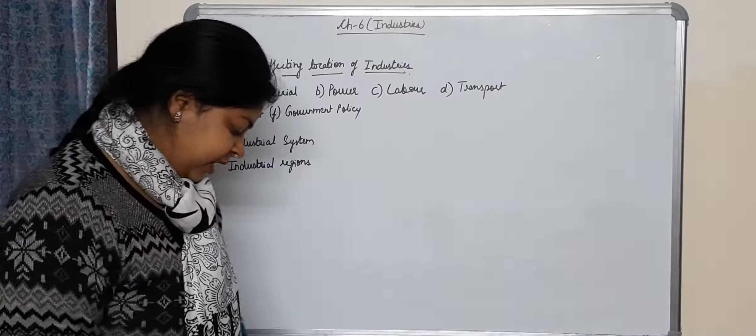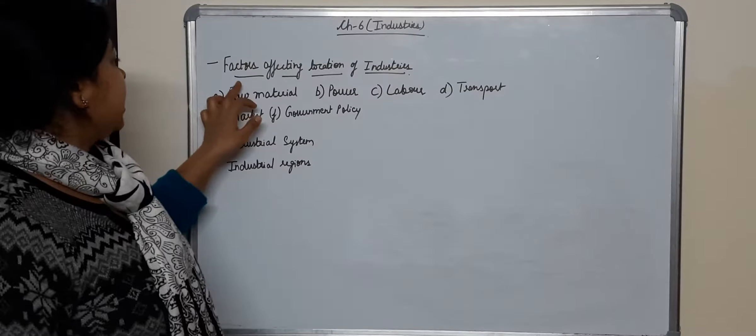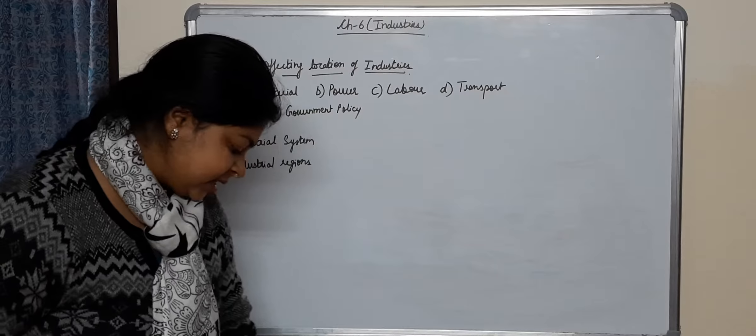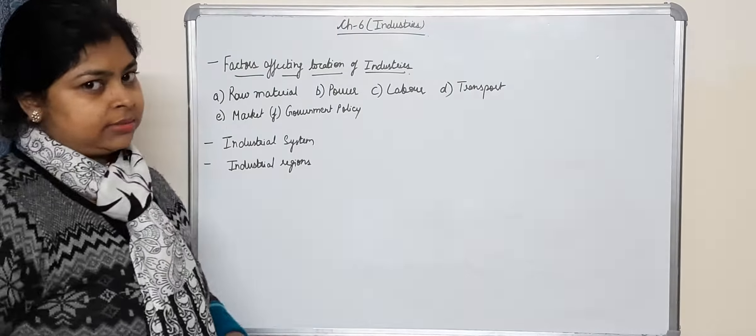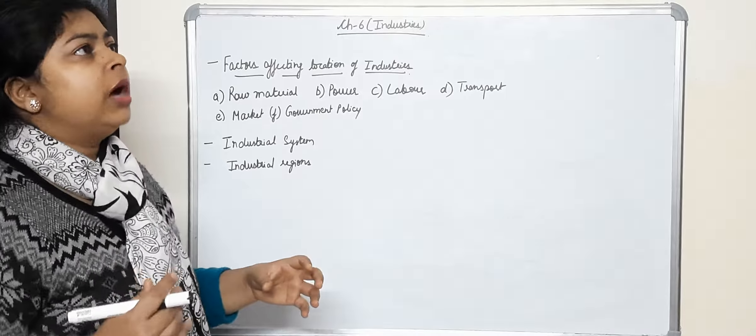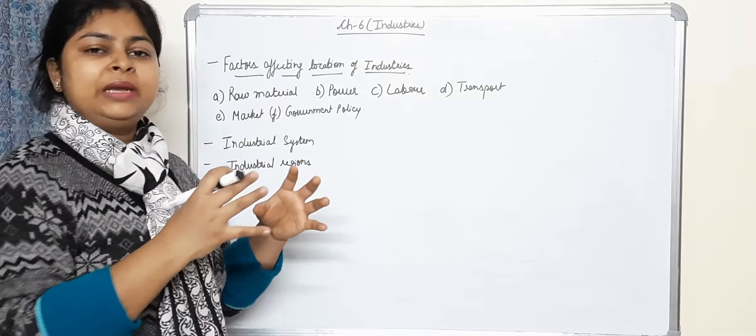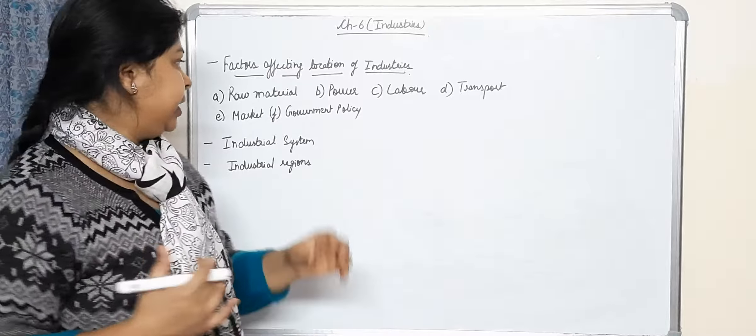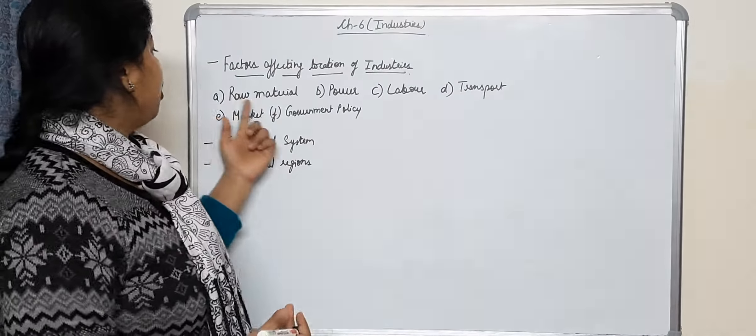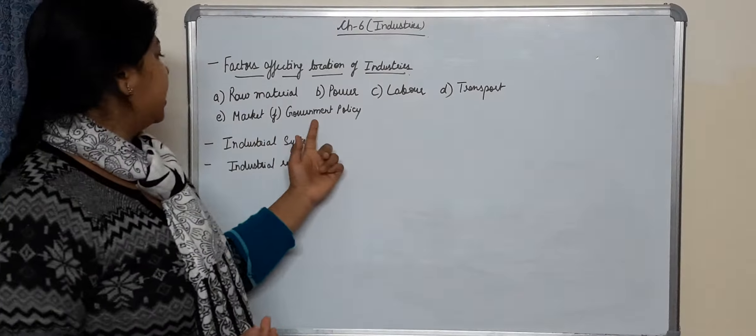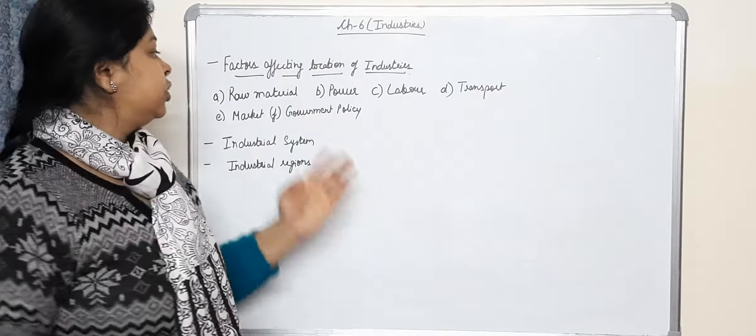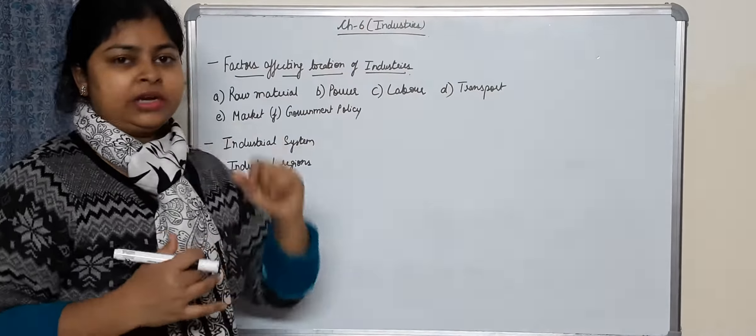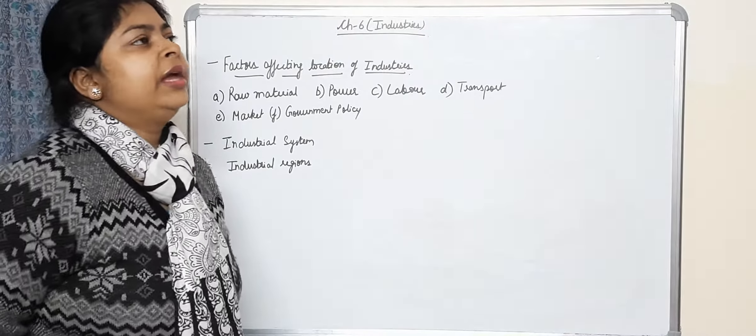So now we are going to discuss in detail the next topic which is if you can see on page number 161, factors that affect the location of industries. We need to establish our industry: raw material, power, labor, transport, market and government policy. So these are few factors which affect the location of industries.